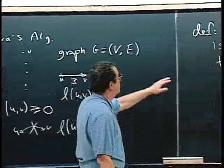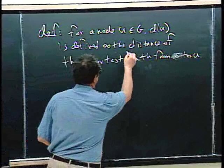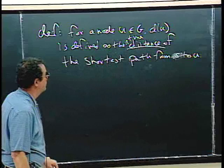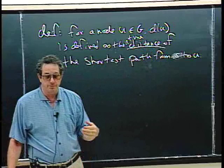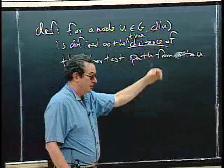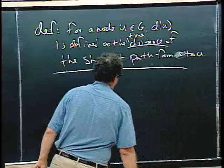For a node U, D(U) is the true and correct distance of the shortest path from S to U. In Dijkstra's algorithm we'll also have a programming variable called D(U), and we'll want to prove that what the program sets for D(U) is in fact the correct value. It's a little confusing to use both, but hopefully that won't cause too much of a problem.